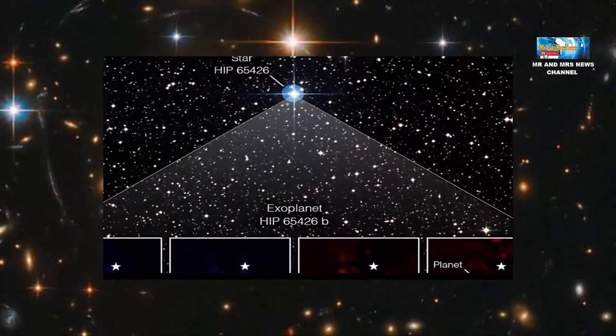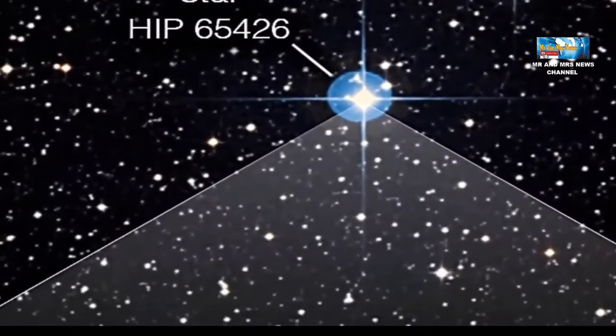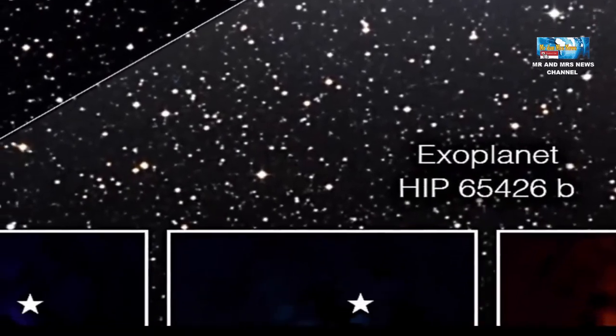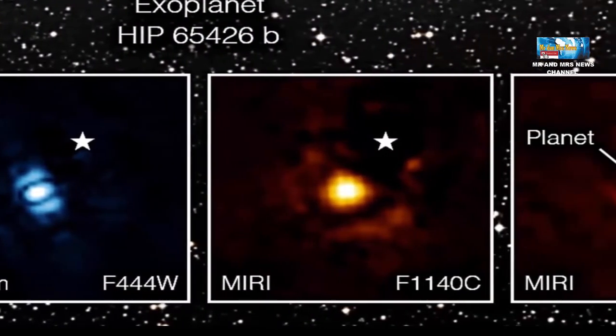Planet ekstrasurya pertama kali ditemukan pada tahun 2017 menggunakan teleskop sangat besar dari European Southern Observatory dan instrumen SPHERE-nya yang terletak di Chile.